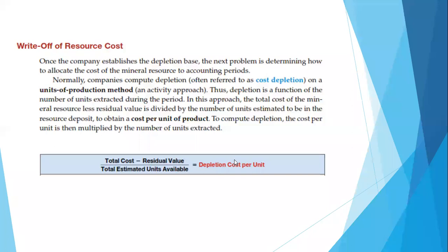Ini adalah untuk menghitung berapa biaya depletion per unit. Jadi dari tiga jenis biaya itu nanti dikurangi residual value, terus dibagi dengan total estimated unit available. Jadi berapa sampai selesai penambangan itu menghasilkan berapa banyak barang tambang, maka akan kita dapatkan nilai depletion per unit. Nanti tinggal dalam satu periode akuntansi dia berhasil menambang seberapa banyak, itu yang dijadikan depletion cost-nya.